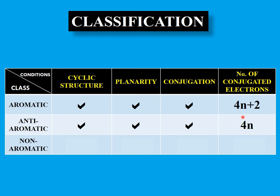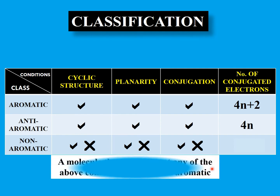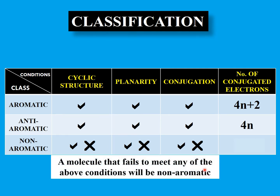Anti-aromatic molecules are usually highly unstable because of the presence of 4n electrons in conjugation. A non-aromatic molecule may or may not have a cyclic structure, may or may not be planar, and conjugation is not a necessary requirement. So if a molecule fails to meet any of the conditions — cyclic structure, planarity, or conjugation — it will be regarded as non-aromatic, and the number of conjugated electrons does not matter in that case.